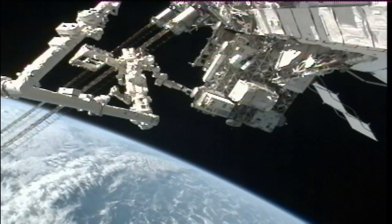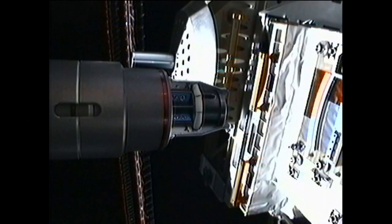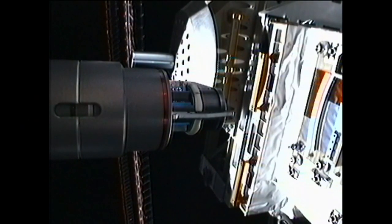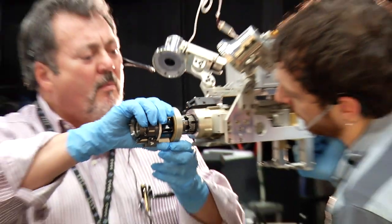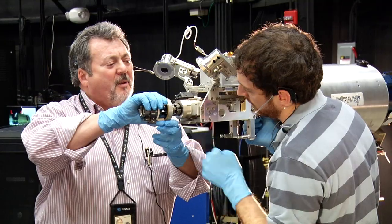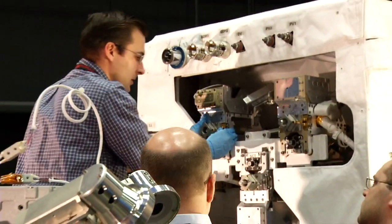On the end of this long arm, there's a custom tool designed for one purpose, removing the safety cap to a valve leading to the fuel tank. Engineers here at the Goddard Space Flight Center designed the tool, the test bed, and the overarching operation.